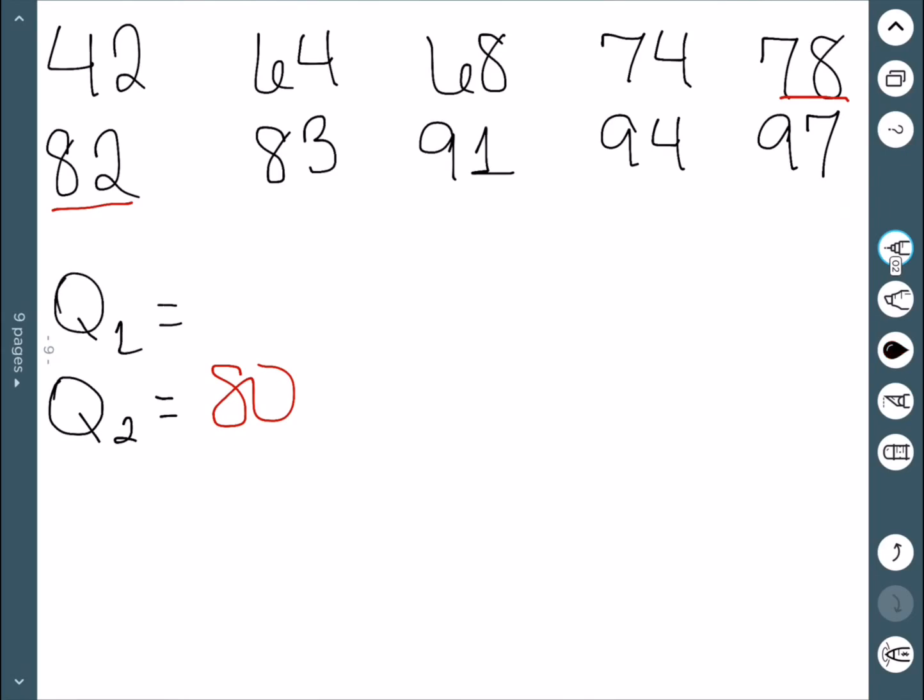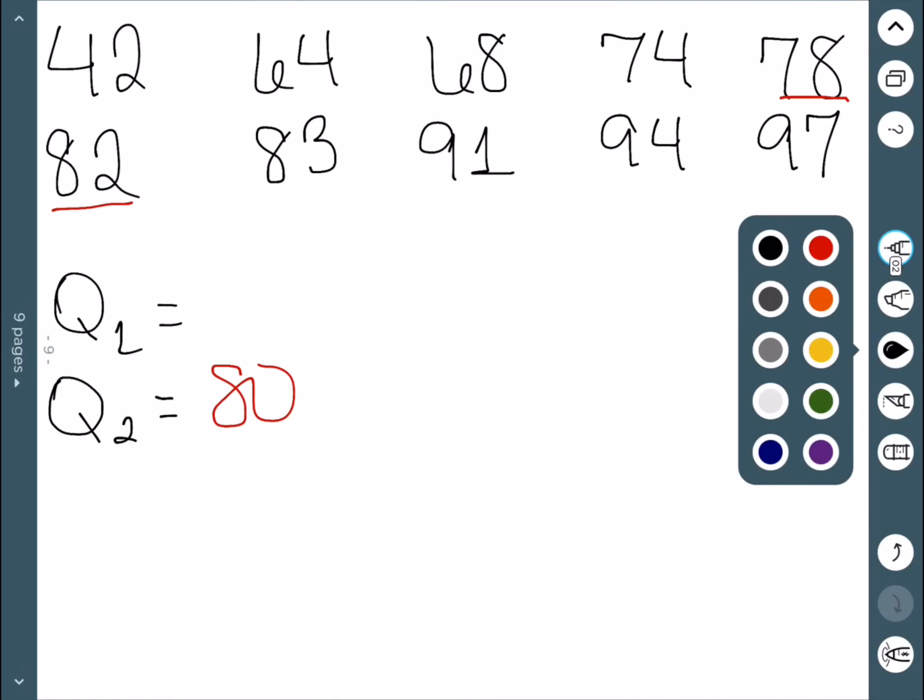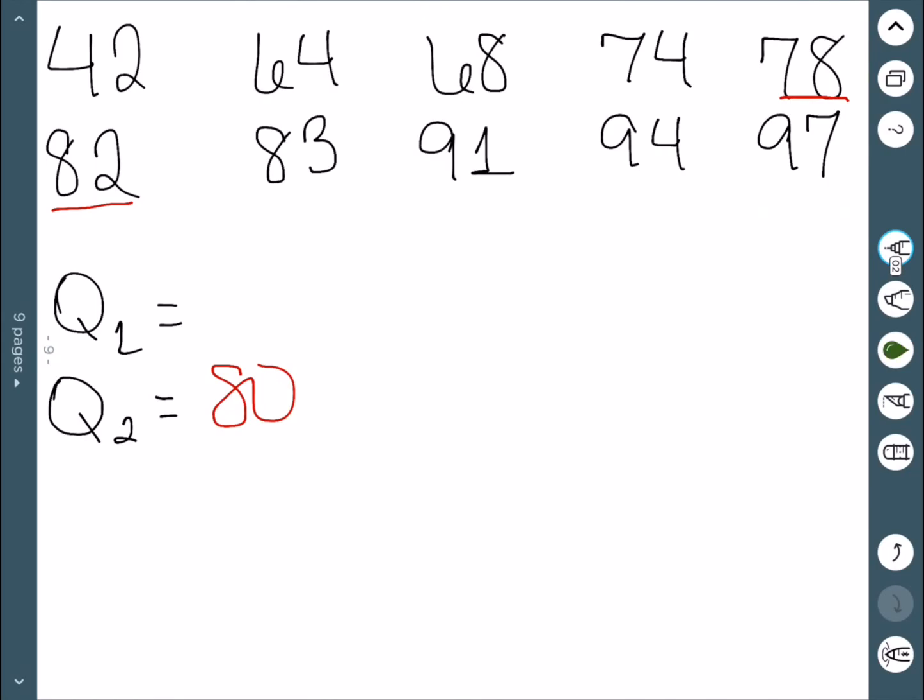For Q1, we now only consider the data below the median. So we are only considering these five values here, and we're going to find the median of those. Since there's five values, the number in the middle is 68.